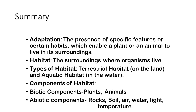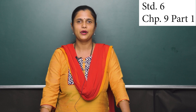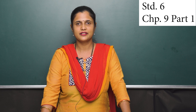Today we have studied about adaptation — the presence of certain specific features which enable a plant or an animal to live in its surrounding. We have also studied about habitat — the surroundings in which an organism lives — and the types of habitats: terrestrial habitat, which means on land, and aquatic habitat. We have also studied about the components of habitat: biotic components and abiotic components. With this we have completed part one of the lesson, 'The Living Organisms and Their Surroundings.'